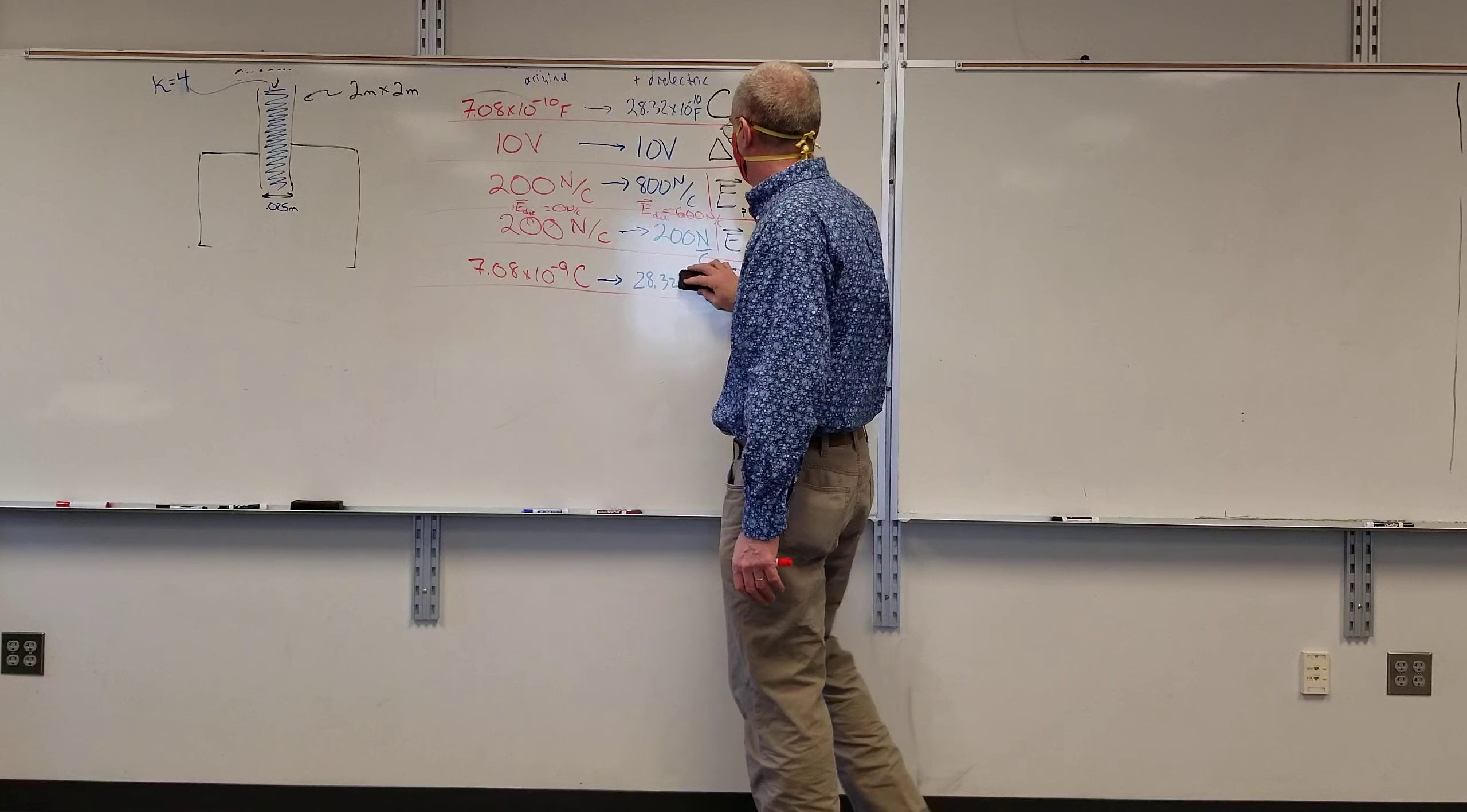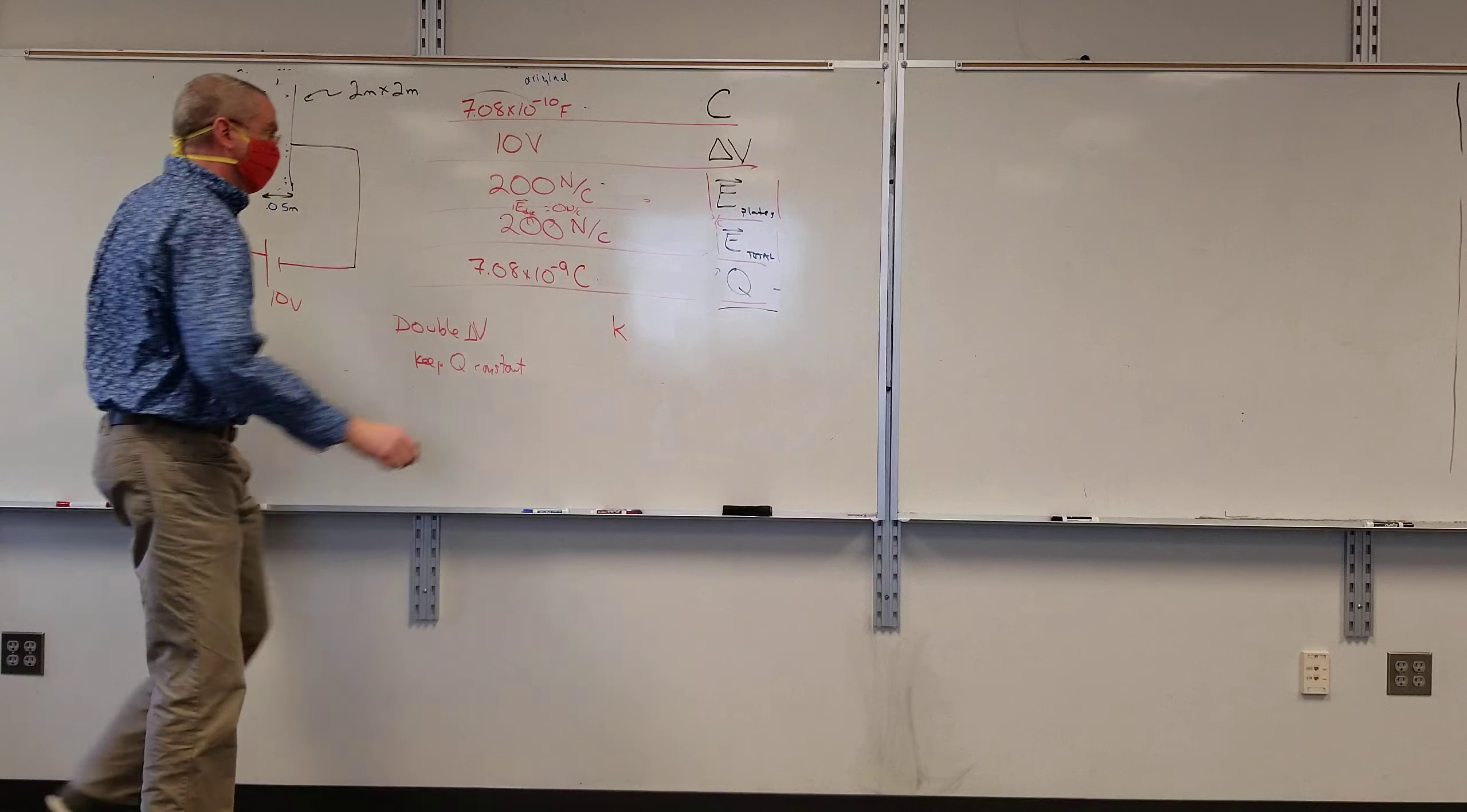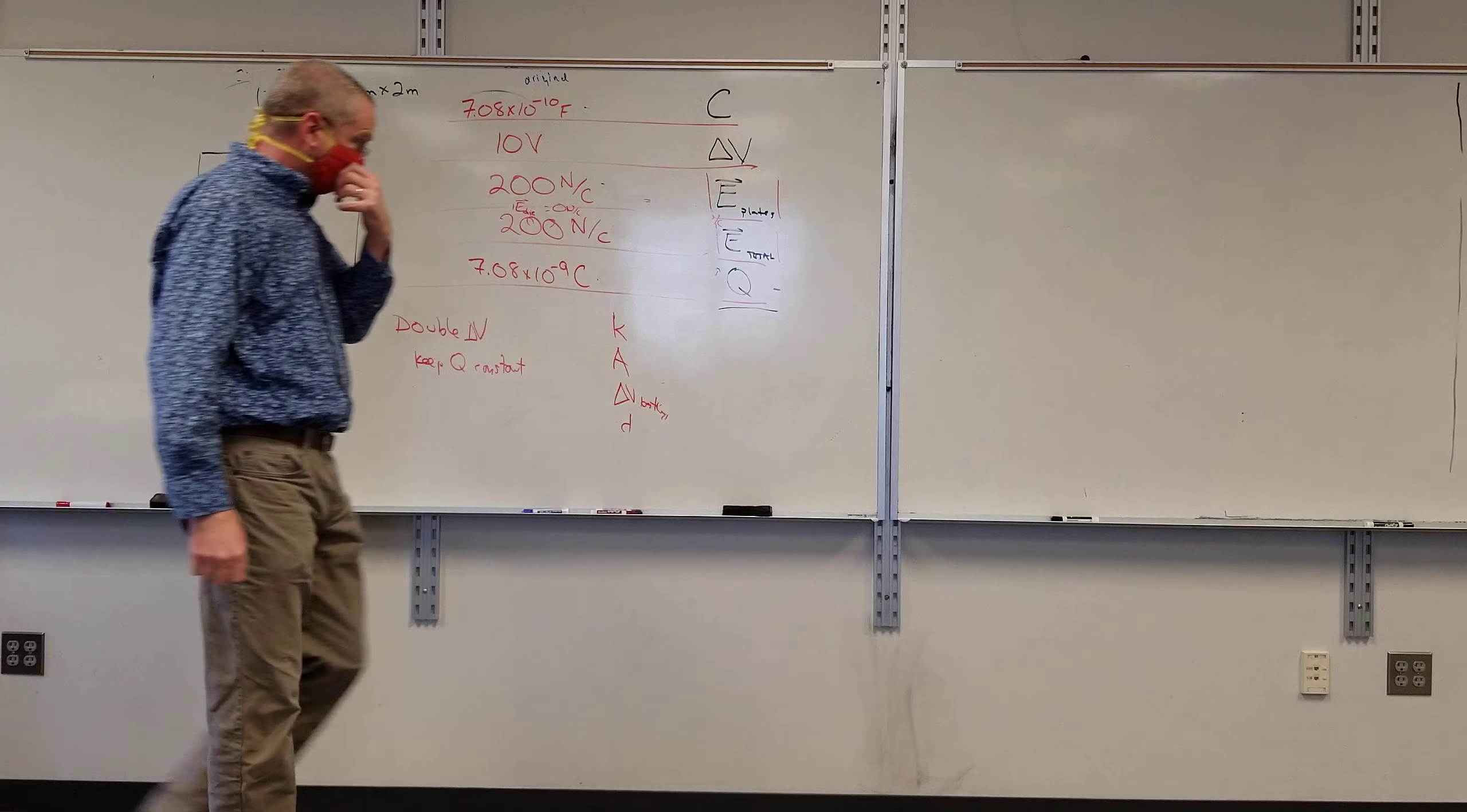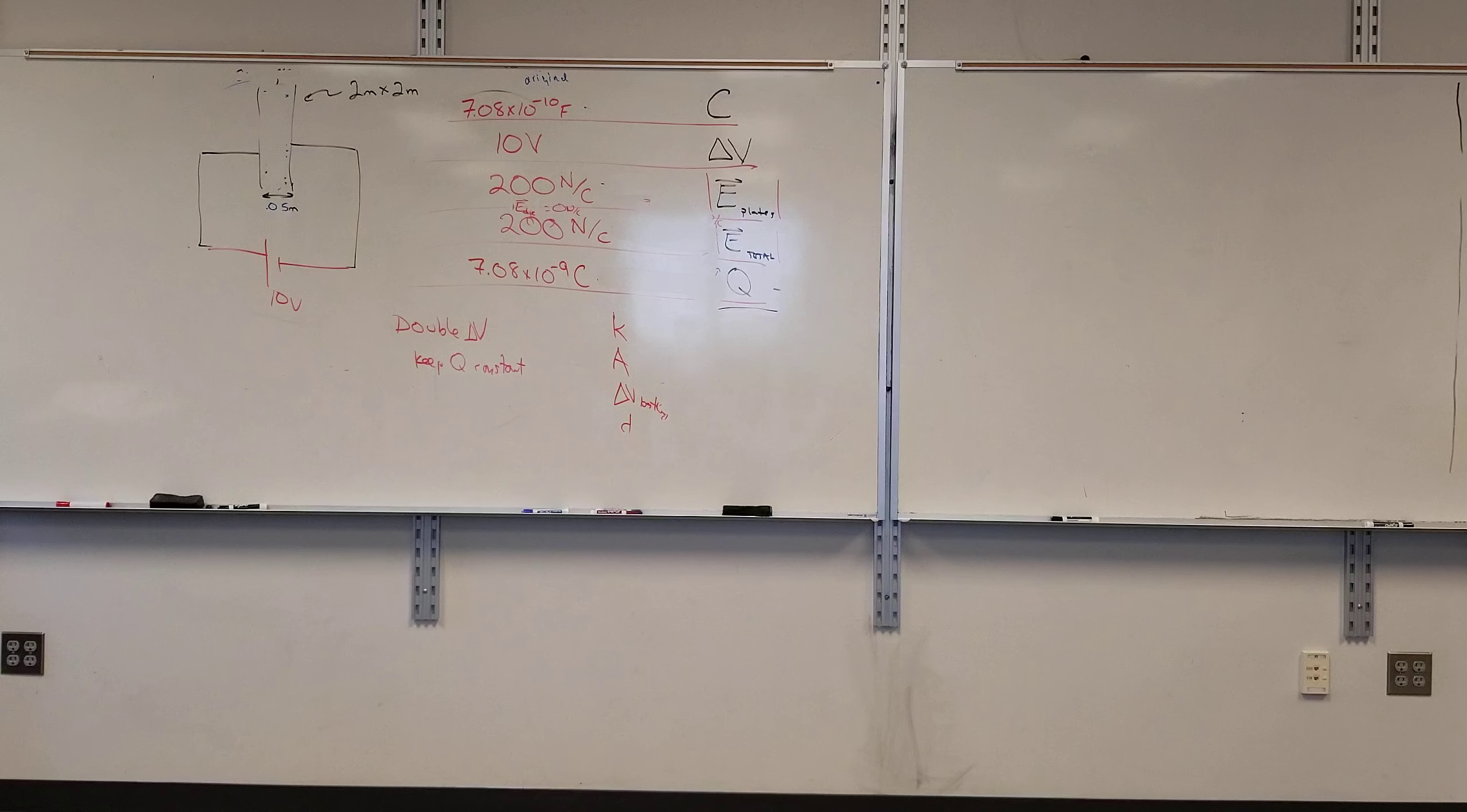So we started out with a battery here of 10 volts and this was 0.95. Now I want to double voltage and keep Q constant. I can manipulate kappa. Start out with the dielectric in between also. We can manipulate dielectric, area, voltage with battery, and the distance between the plates. Now realistically, if you wanted to manipulate the area from a realistic point of view, think back to the lab, you can start to shift them apart so that there's less overlap.